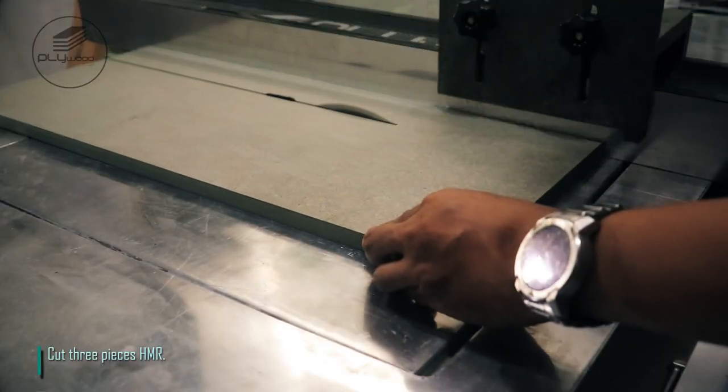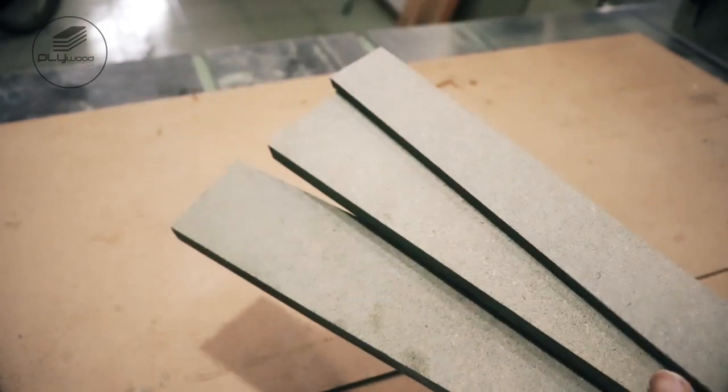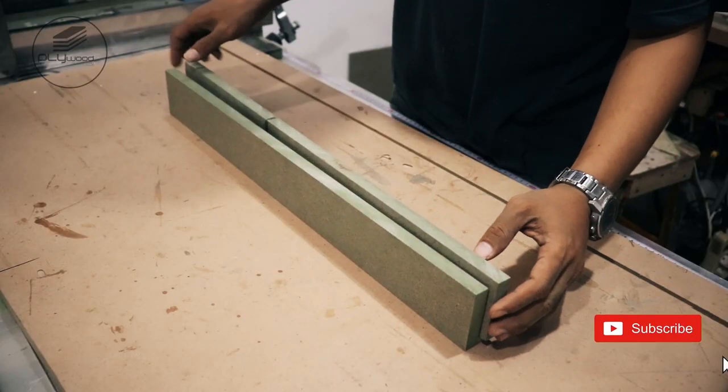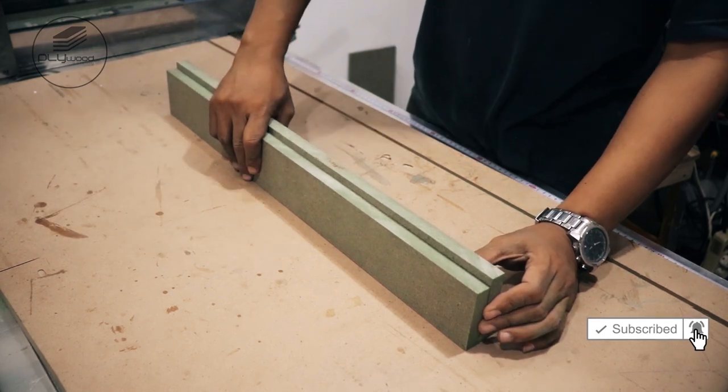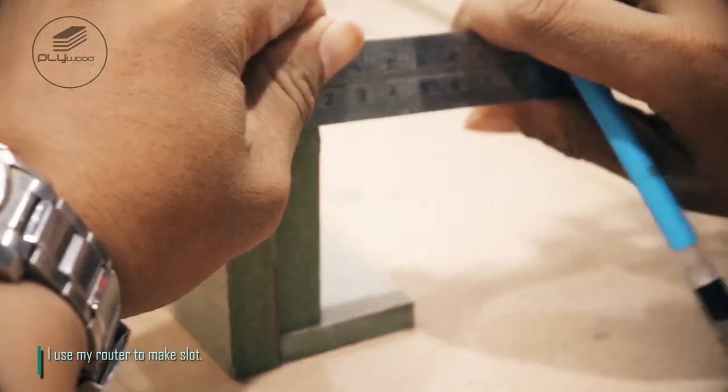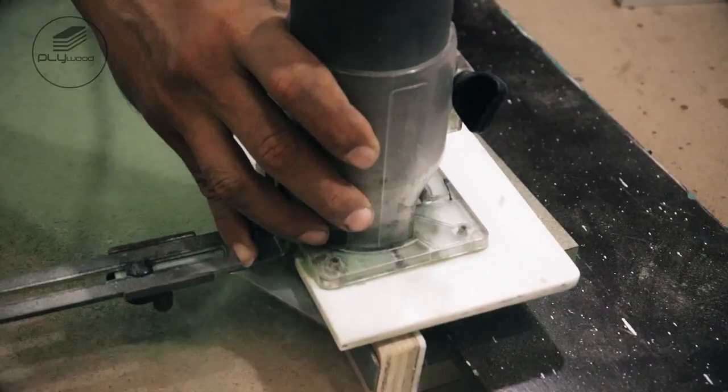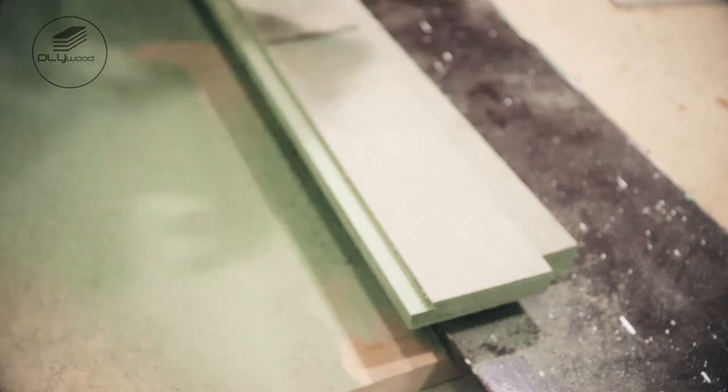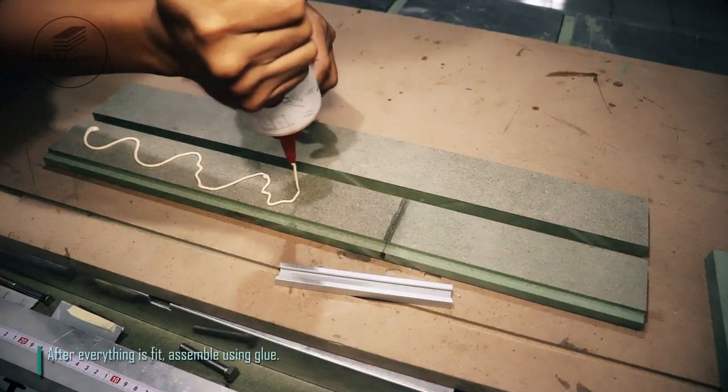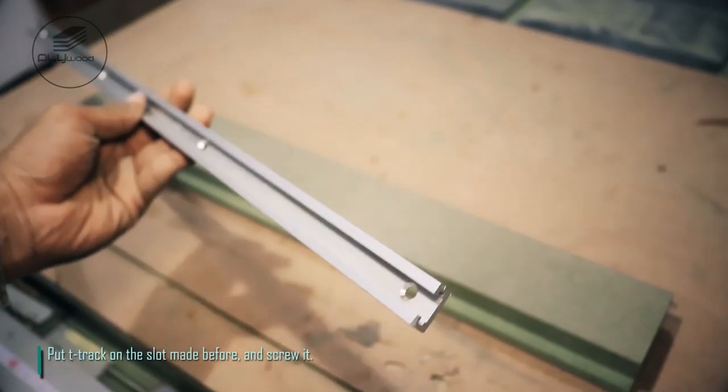Cut three pieces of HMR. Assemble all cuts and give mark to add mini t-track. I use my router to make slot. After everything is fit, assemble using glue. Put t-track on the slot made before and screw it.